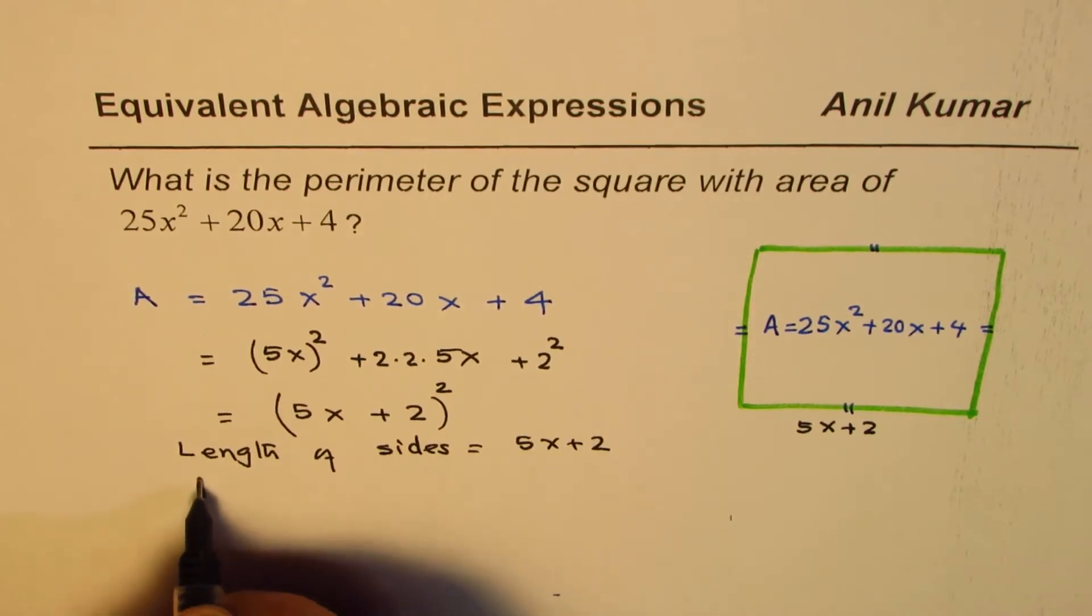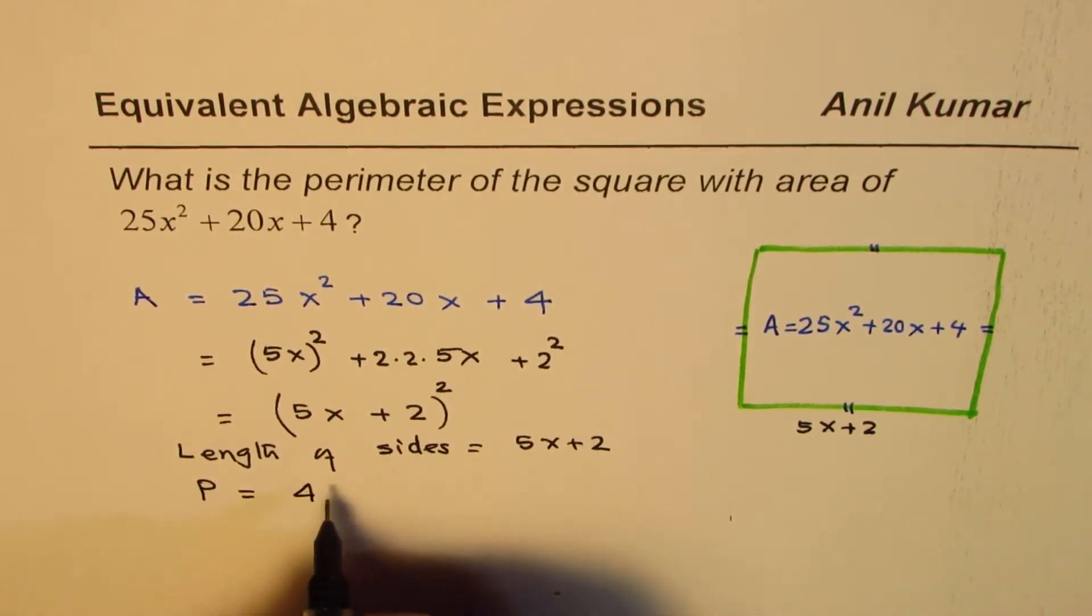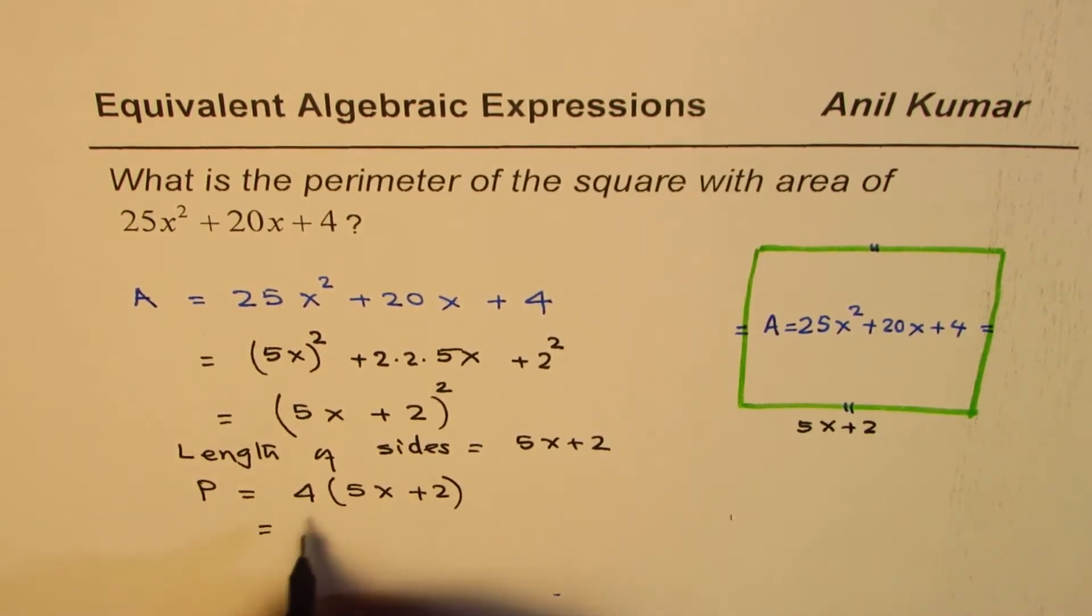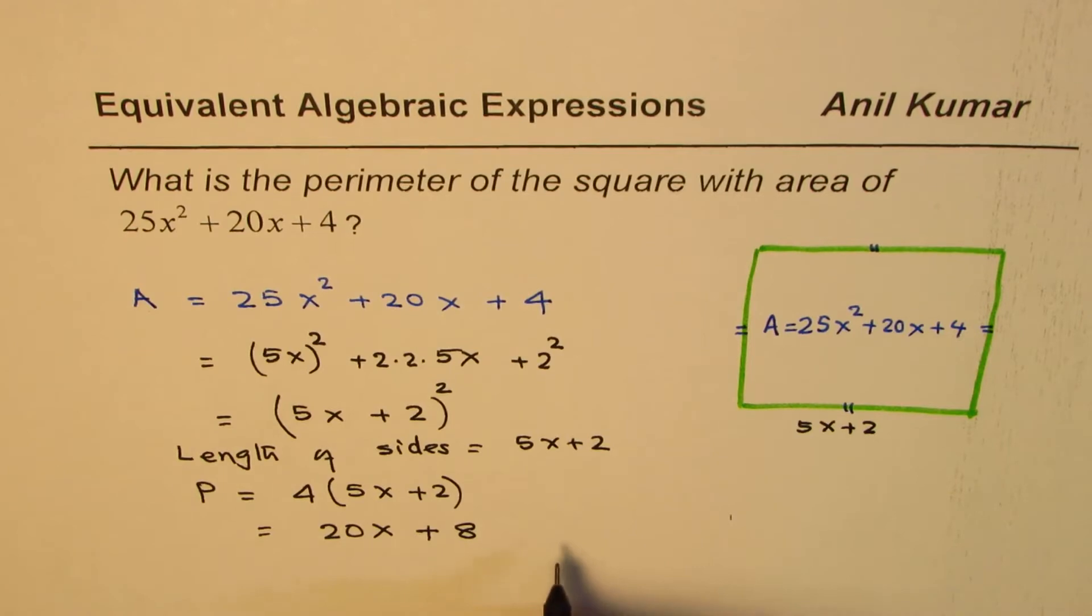If that is the length, then the perimeter P will be 4 times (5x + 2). If you multiply by 4, you get 4 × 5x = 20x, plus 4 × 2 = 8.